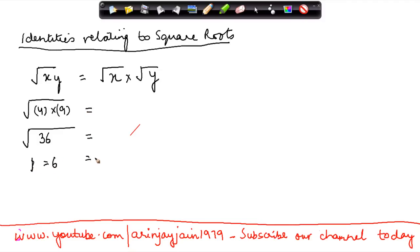Now let's see whether this property holds on the right side as well or not. If square root of x y, x was 4, should be equal to square root of 4 into square root of y into square root of 9.